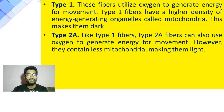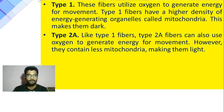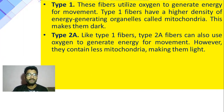अब Type 2A की बात करेंगे। Type 2A को intermediate muscle fiber भी बोला जाता है। Type 1 के comparison में इसमें थोड़े कम mitochondria होते हैं।